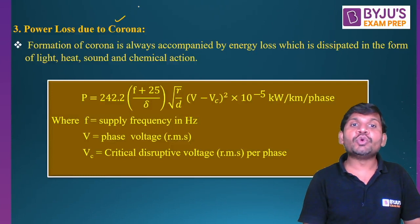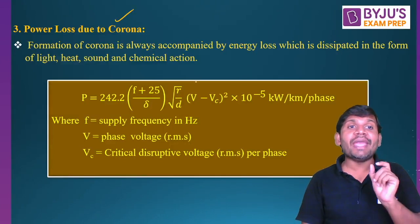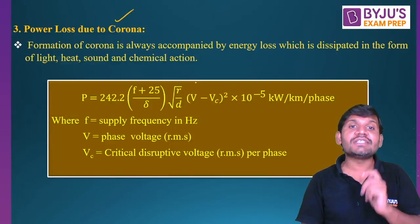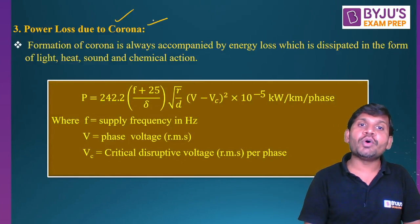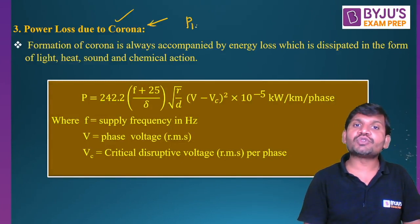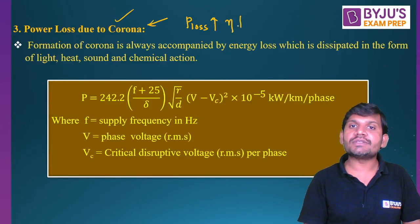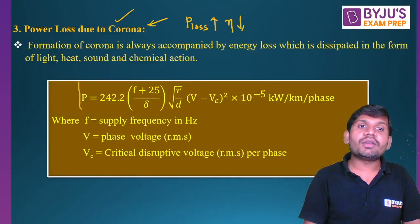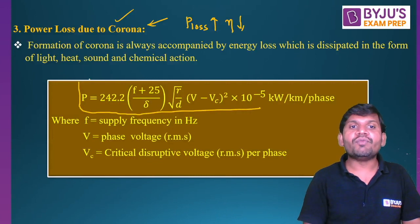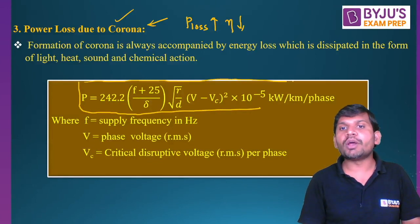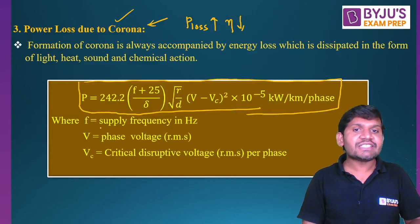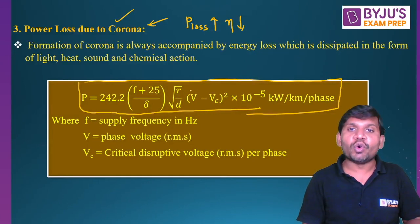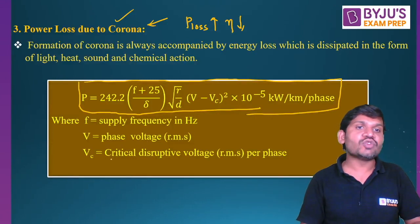Then, power loss due to corona. The main effect of corona is that it causes power loss. Due to the corona effect, power losses increase and efficiency is reduced. This is the formula for the power loss expression — a very important formula to solve problems. In this formula, F is the supply frequency, V is the phase voltage (the system voltage), and Vc is the critical disruptive voltage, which is also a phase voltage.